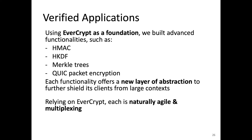To evaluate whether these performance improvements translate to the application layer, we developed a number of additional verified functionalities and applications, ranging from simple constructions like HMAC to complex transport encryption for the QUIC network protocol. Each of these builds on EverCrypt's agile multiplexed API, which greatly simplified the necessary application proofs and makes it trivial to switch to new algorithms without changing any code or proofs. As we add new targeted implementations for better performance, all of these applications transparently benefit from these improvements.